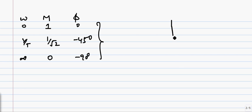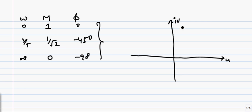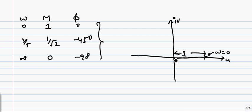Taking a complex plane with U and jV axes: when ω = 0, the value of the phasor is 1 with angle 0°. When ω = 1/T, the magnitude M is 1/√2 and the angle is −45°. At this point, the real value and the imaginary value are exactly the same magnitude.